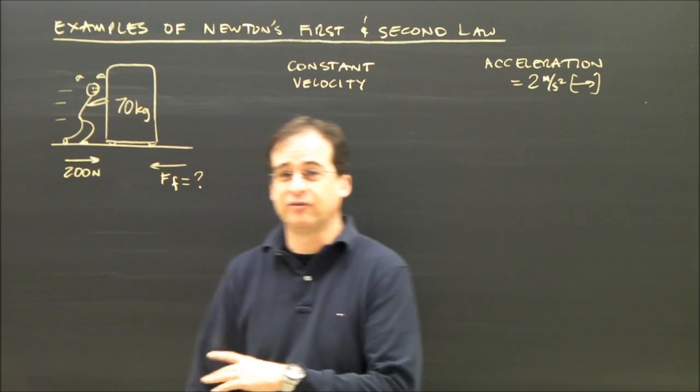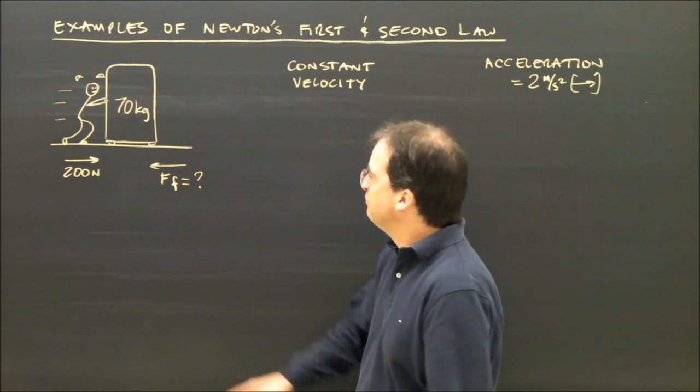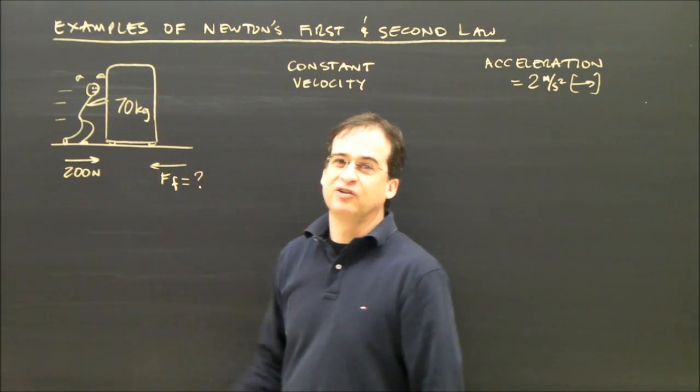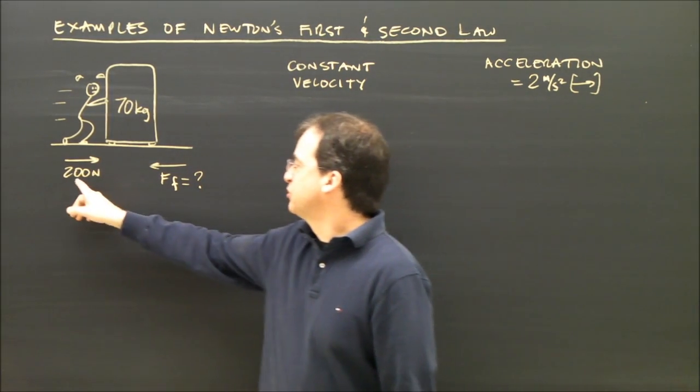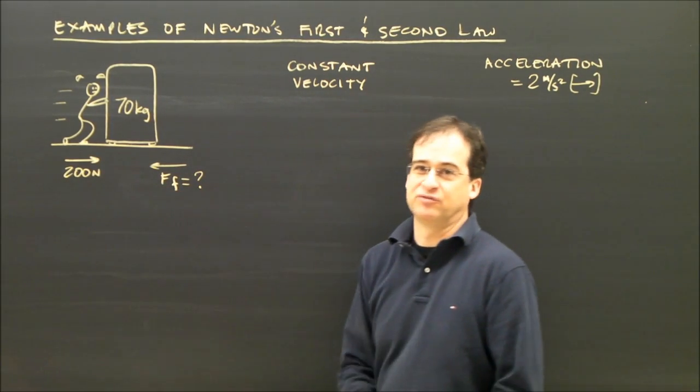Let's do a calculation that shows the difference between Newton's first and second law. Here's an object, a 70 kilogram fridge, and I'm pushing it across the kitchen in my house. I'm pushing with 200 newtons, and I want to know what the force of friction is.